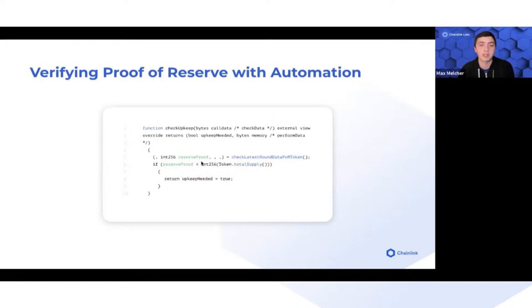So if the token supply ever exceeds the proof of reserve feed, you know that some preventative action needs to be performed. If this condition ever fails, then as soon as the next block you can perform some preventative action, like shutting down lending.